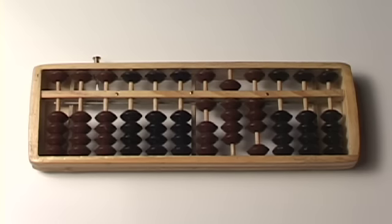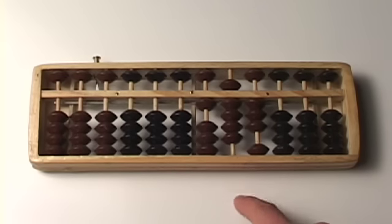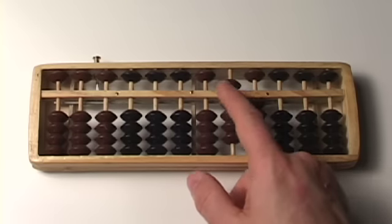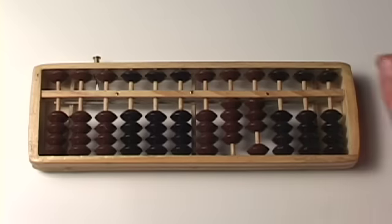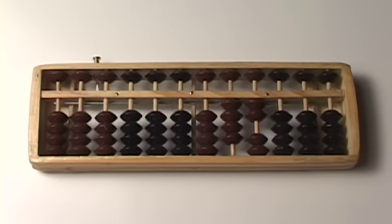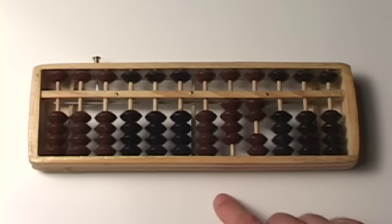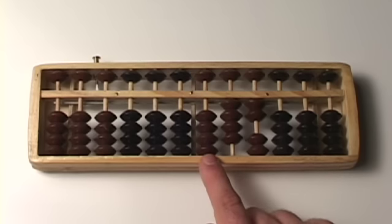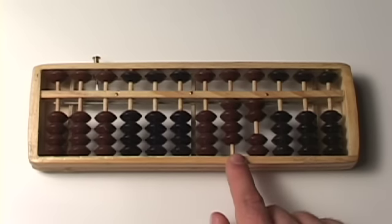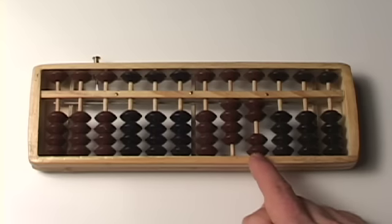151. So 193 minus 151. 151 is written as a one, a five, and a one. So I need to take away one here, a five here, and a one here. Right. So 193 minus 151 is, oh, well, this is zero here now.